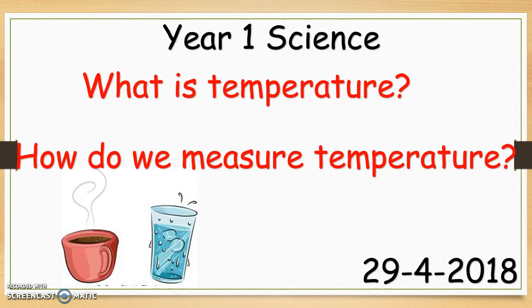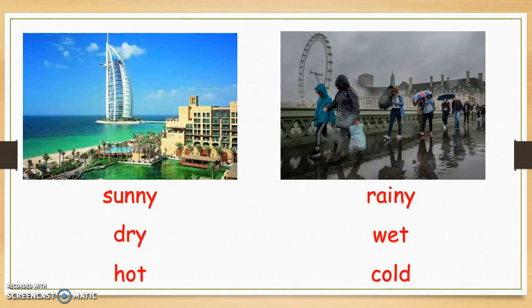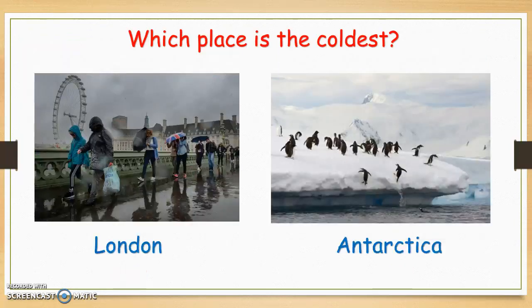Let's have a quick look at what we did last week. In science we compared the weather in Dubai to the weather in London. We looked at adjectives we could use to describe the weather in each place. For Dubai we came up with adjectives such as sunny, dry, and hot. For London we used adjectives such as rainy, wet, and cold, based on the two pictures we were studying.